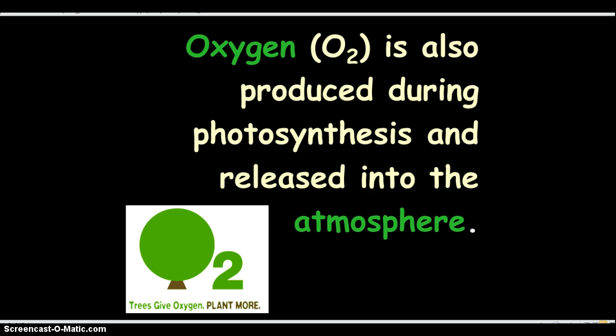Oxygen is also produced during photosynthesis and released into the atmosphere. Plants give off oxygen, and we give off carbon dioxide. So plants give off oxygen — which is what we need. It's a perfect cycle, a perfect fit puzzle.